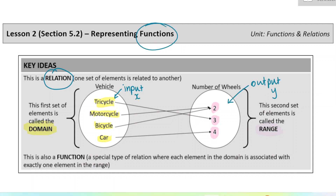This is a relation — it relates one group of objects to another. This relation also happens to be a function. Not all relations are functions, but this is a function. The definition of a function is that anything in the domain can only have one mapping — can only relate to one thing in the range. A tricycle cannot have two different numbers of wheels; it only has three. So that is a function: each input or each thing in the domain only maps to one thing in the range.